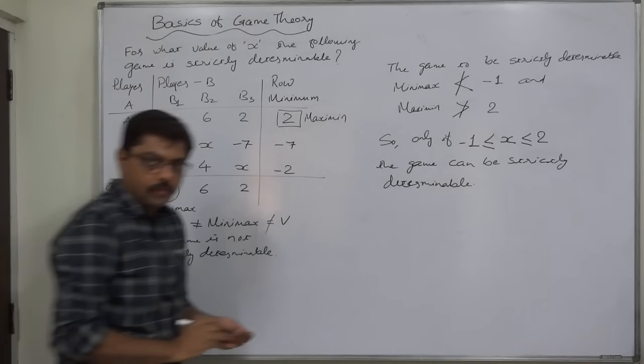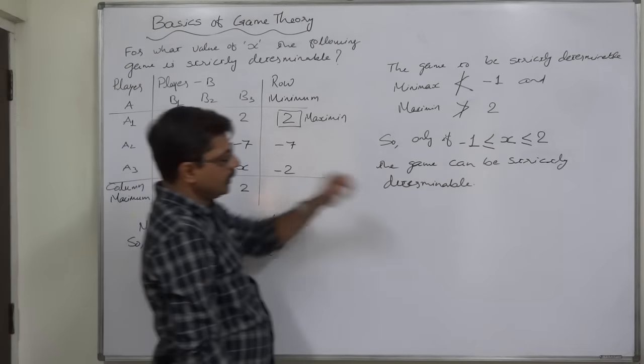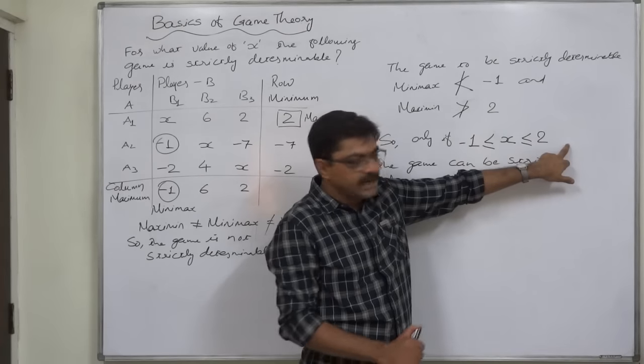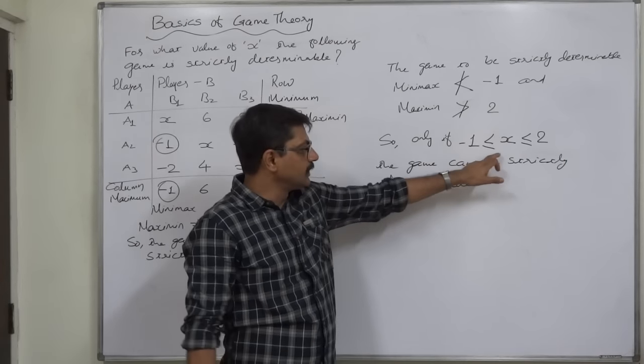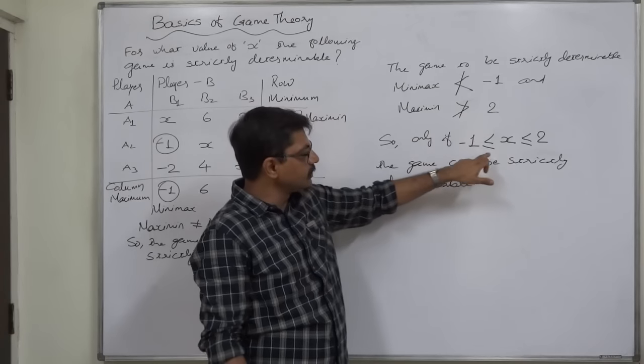I suggest you all to assume three types of values of X. One is less than minus 1, another is greater than 2, and the third is between these two.